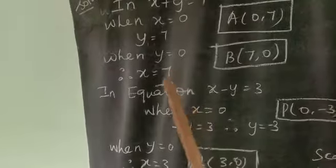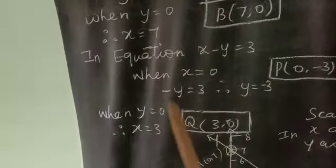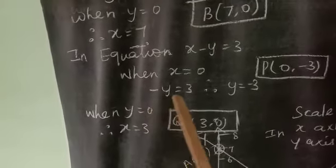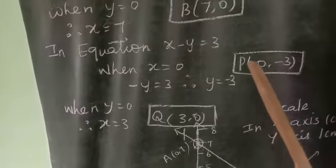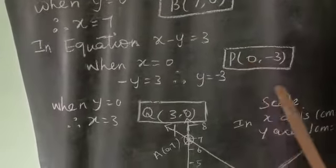When x is equal to 0, then we get minus y is equal to 3. Therefore, y is equal to minus 3. So the P point is 0, minus 3.